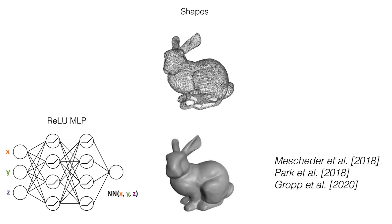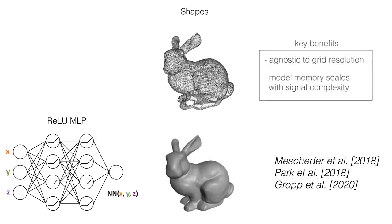This emerging representation has many benefits. It is agnostic to grid resolution, and the memory required generally scales with the complexity of the signal, independent of spatial resolution.